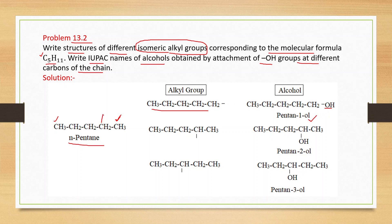For normal pentane, we number the carbons: first, second, third, fourth, and fifth. If you remove a hydrogen atom from the second carbon, you get pentane-2-ol. Removing a hydrogen from the third carbon gives pentane-3-ol. So normal pentane gives three alcohol groups and three corresponding alcohols.